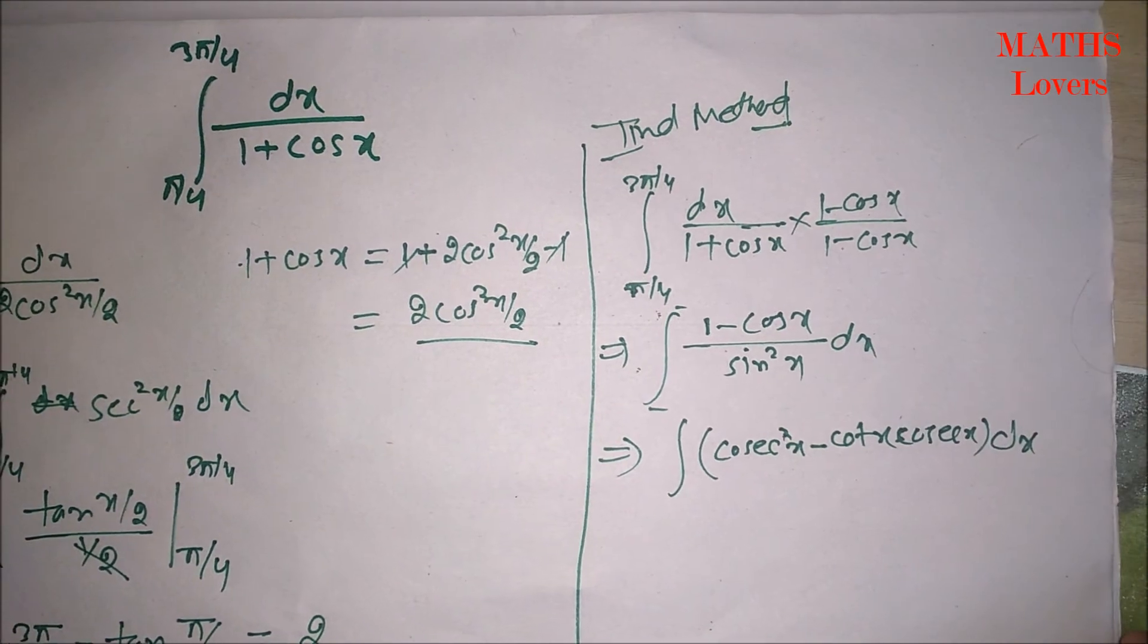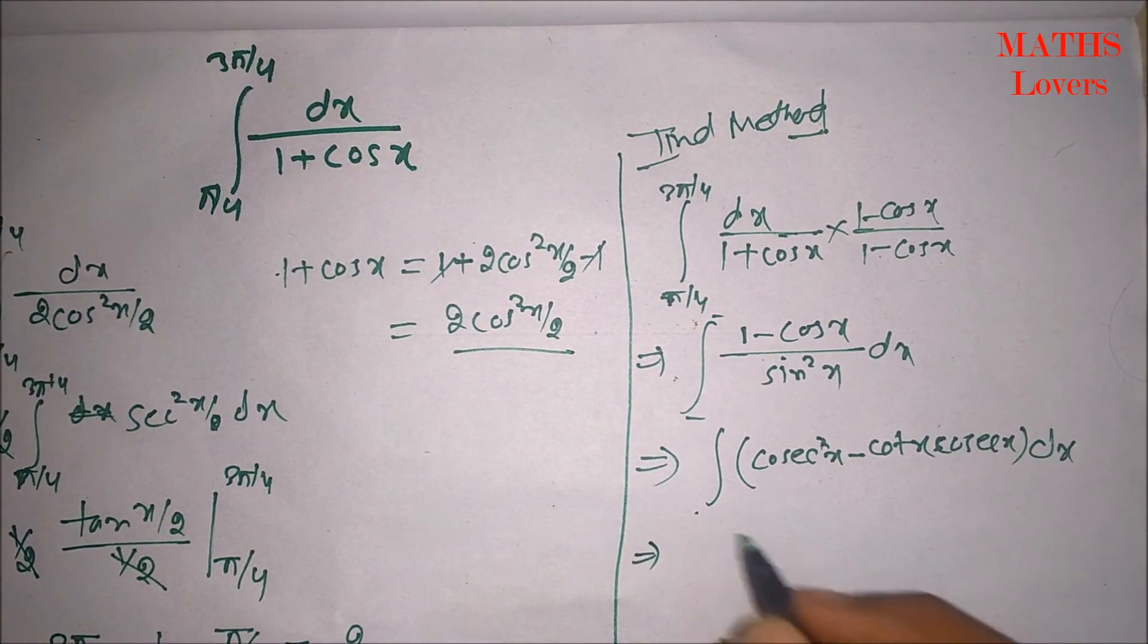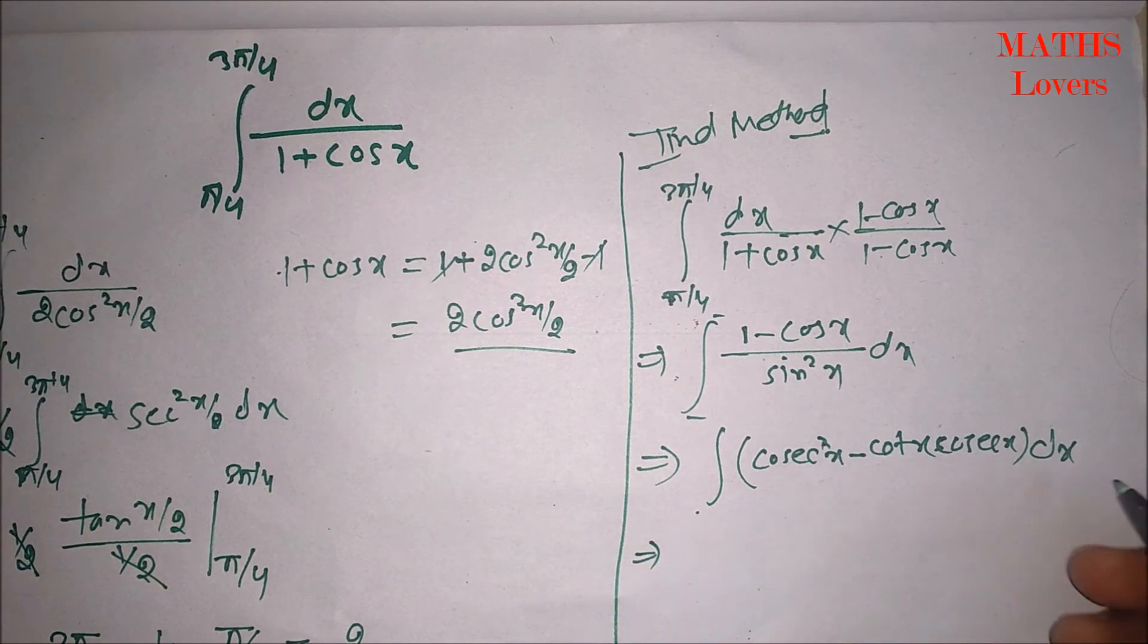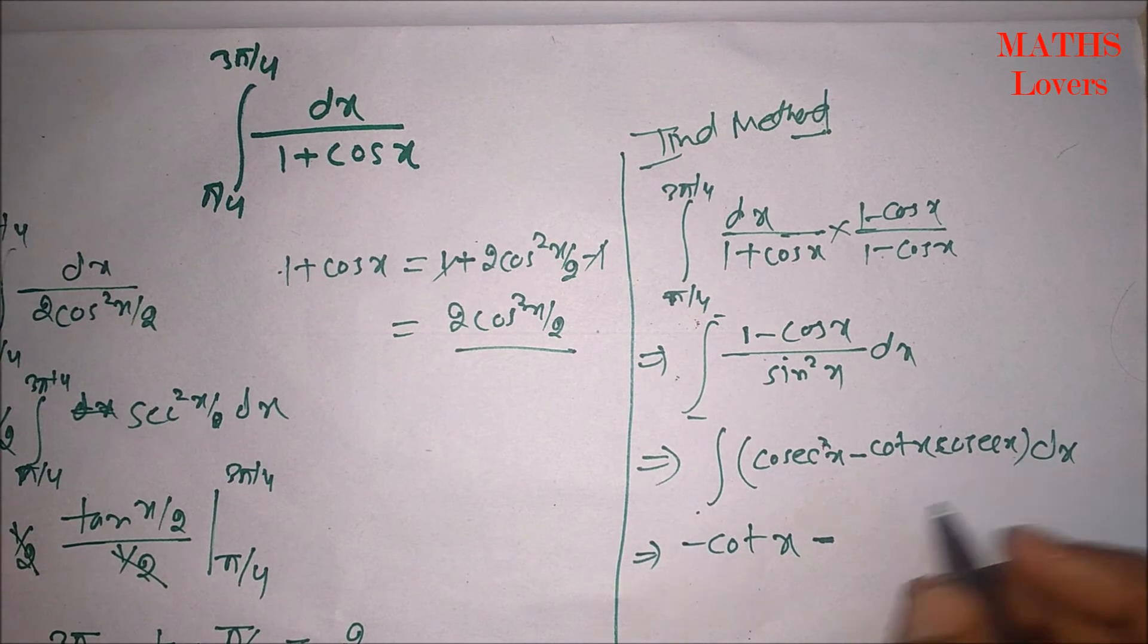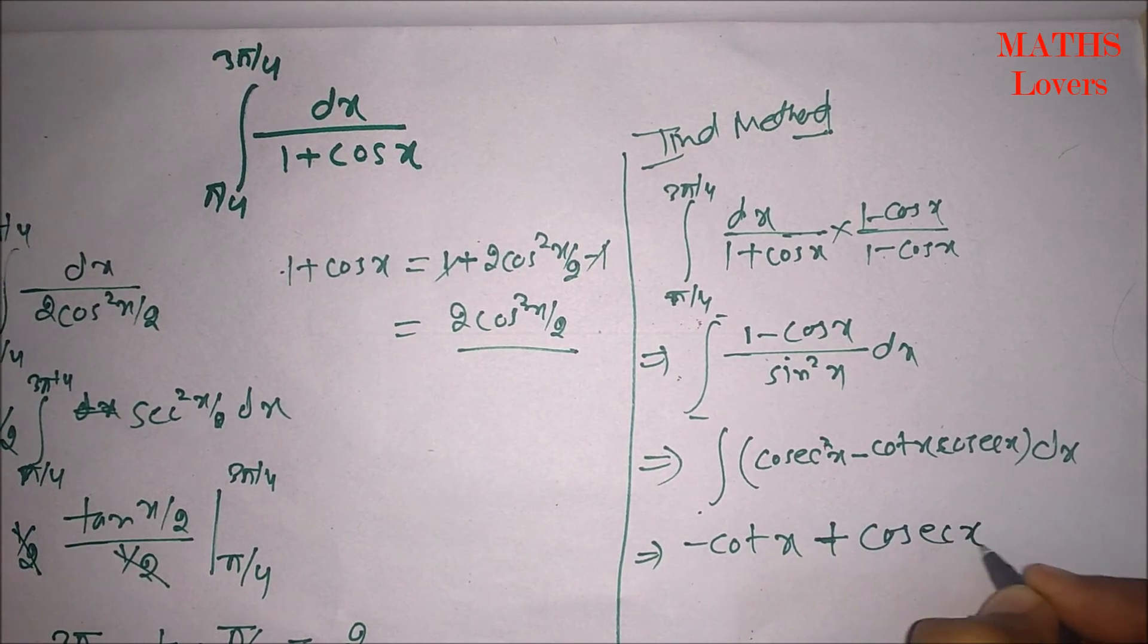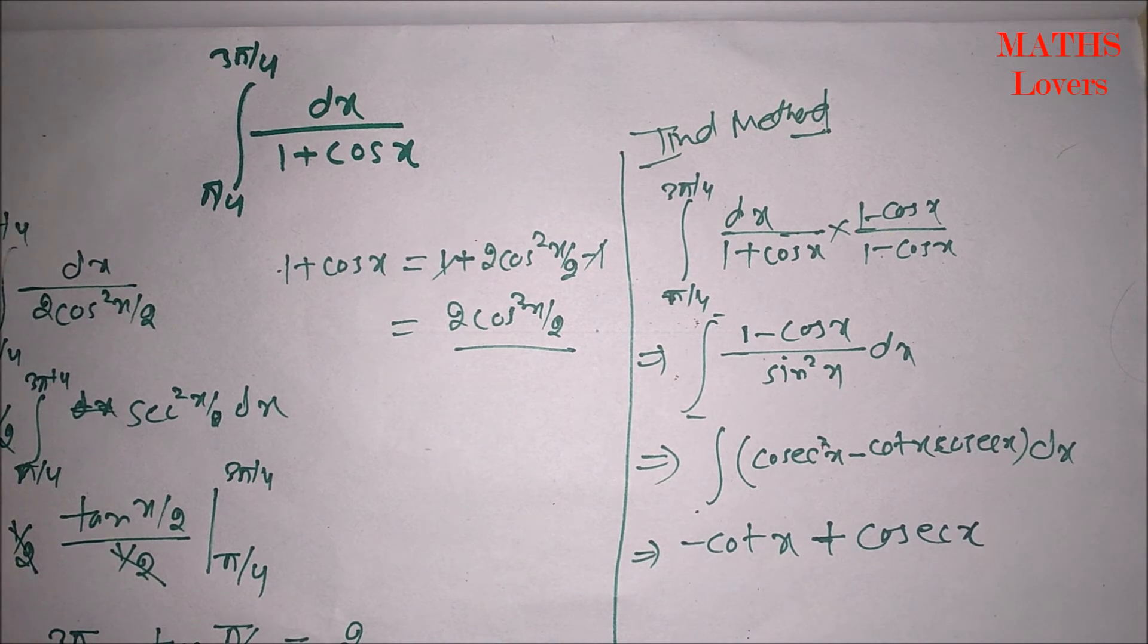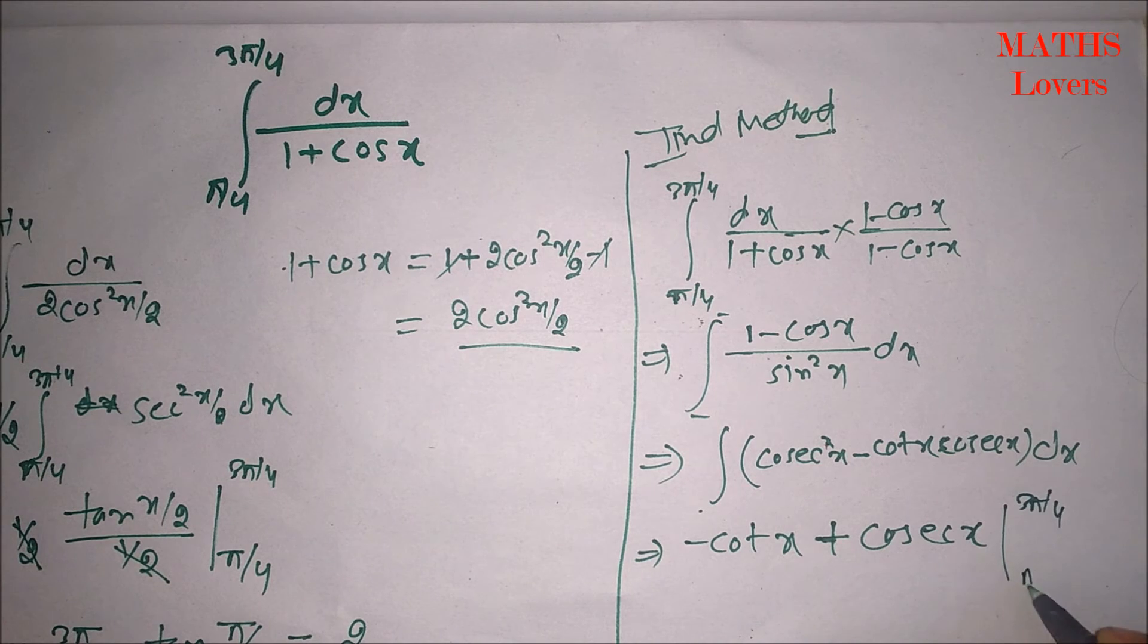Now, we know the integration of both. So, we can write it like cosec square x integration will be minus cot x minus cot x integration will be minus cosec x. So, like this. This is the integration. Now, we will put the limit 3 pi by 4 and pi by 4.